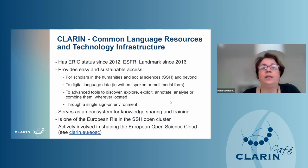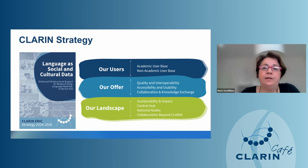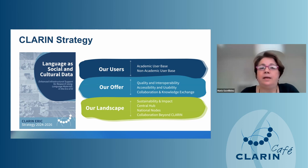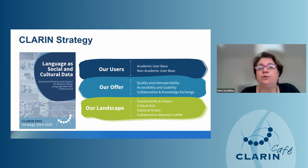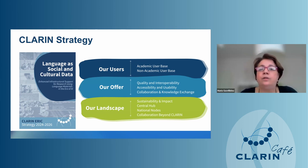CLARIN is one of the European research infrastructures in the SSH Open Cloud Cluster and participates in the Open Science Cloud. We have three pillars in CLARIN's strategy: our users — academic or non-academic — what we offer them, including quality assurance and interoperability between resources, datasets, and tools through a continuously accessible and sustainable environment, and collaboration through our knowledge centers.